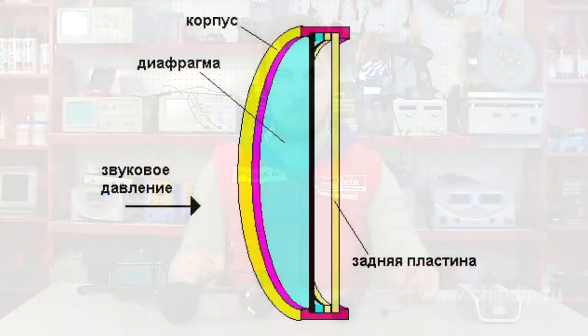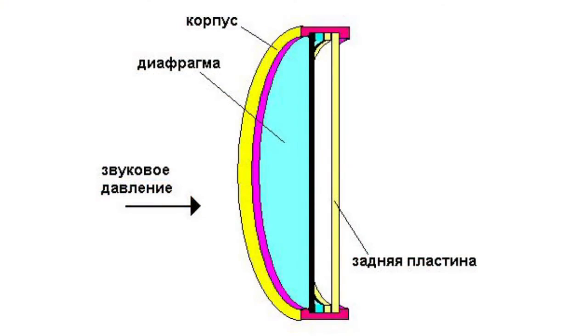Additionally, the condenser microphone uses 1.5V for amplifier powering, as without the amplifier the signal that comes out of it is very weak. In pressure-receiving microphones, the sound wave affects only the front side of the diaphragm. In pressure-gradient difference receivers, it affects both sides.